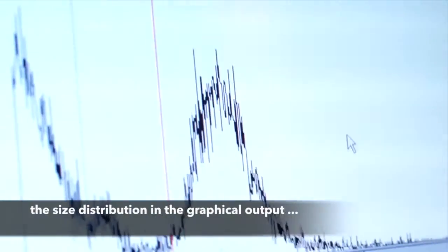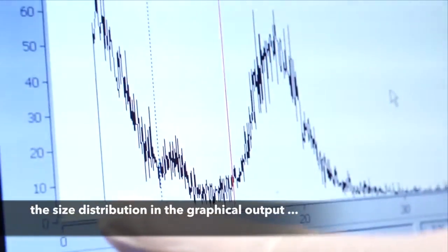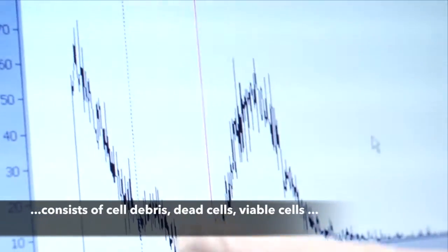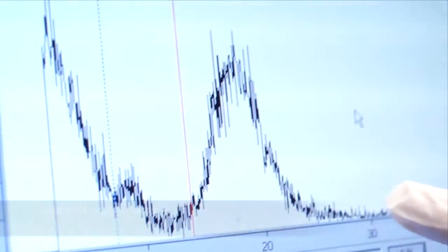In the graphical output, a typical size distribution is clearly visible, consisting of cell debris, dead cells, viable cells and cell aggregates.